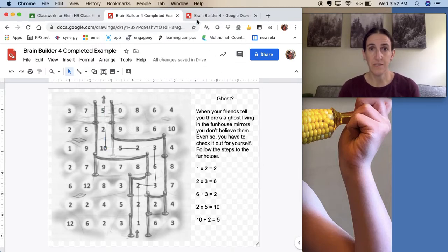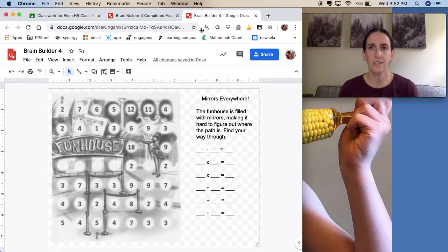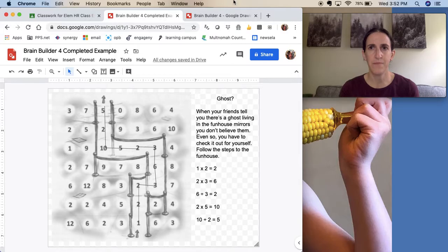So this is what a completed brain builder looks like in this book. And then for your assignment, you're going to solve page two that looks like this. And you can see it kind of gives you the lines, but it doesn't give you all the answers like it did on the first one. Okay. Have fun.